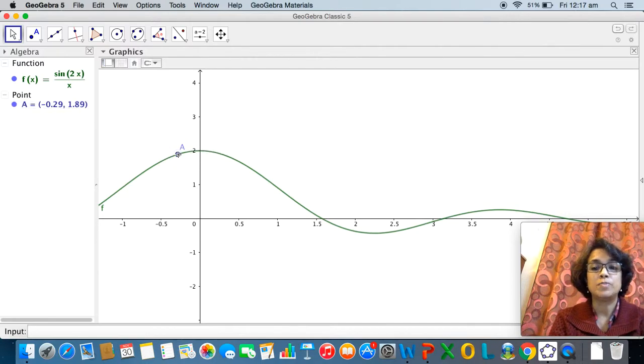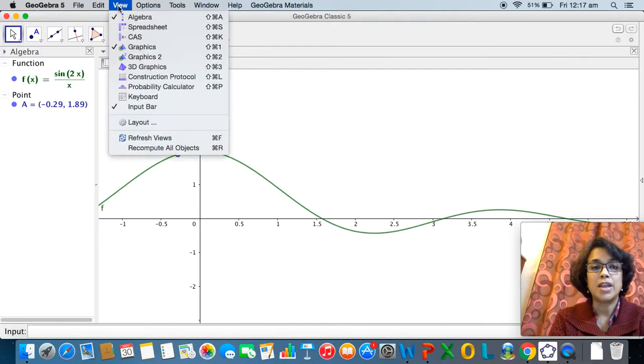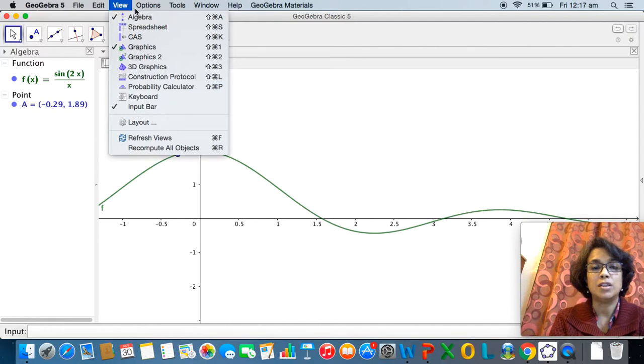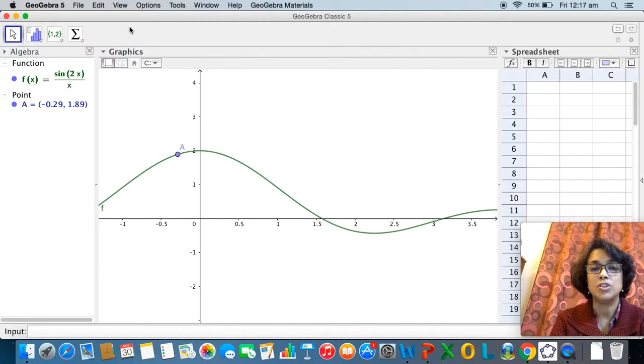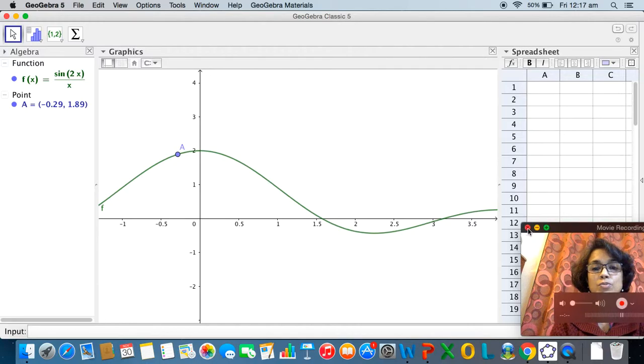Now suppose we want to explore this numerically, so I can go to view and notice that when I go to view there are three things which are ticked on this menu: the algebra view, the graphics view, and the input bar, all of which we can see on the screen. But now suppose I want to call a spreadsheet, so I tap on the spreadsheet and right on the right-hand side you can see a spreadsheet has appeared. Since I want to use a spreadsheet I'm now going to close my video screen and I'll continue explaining.